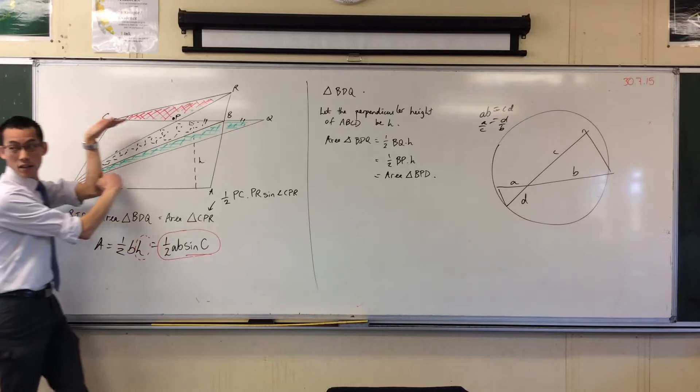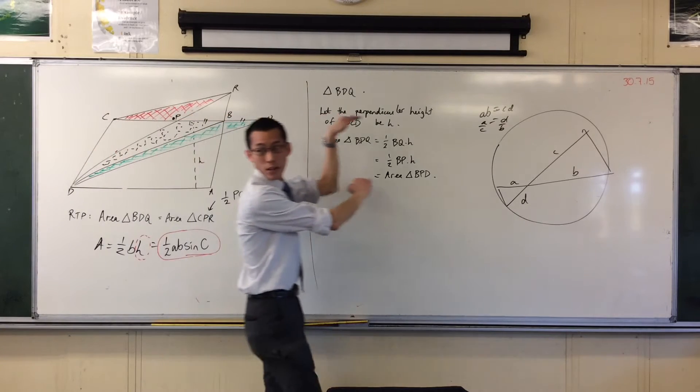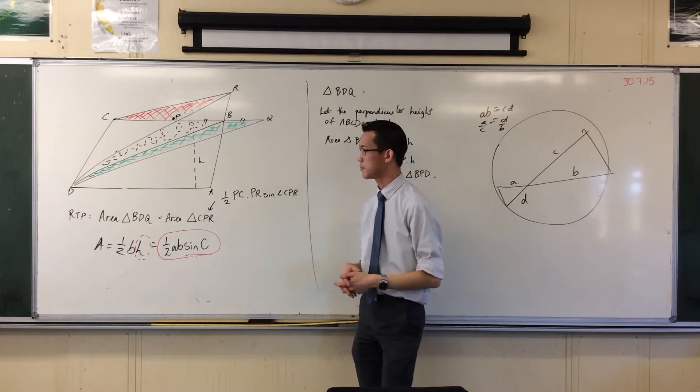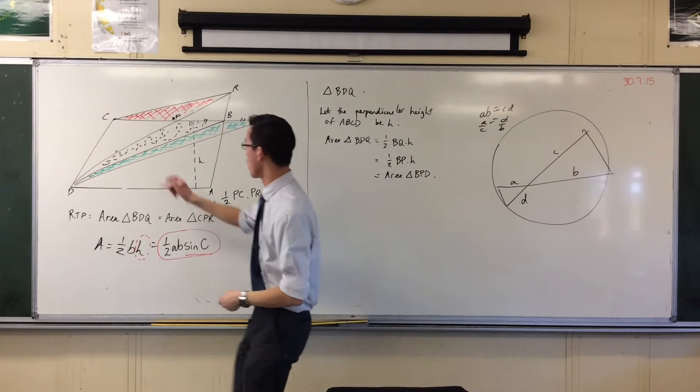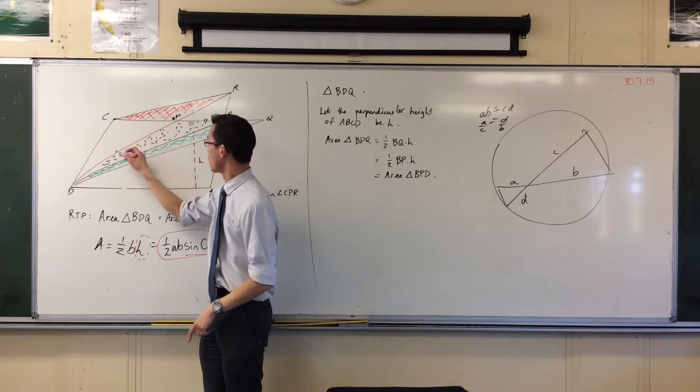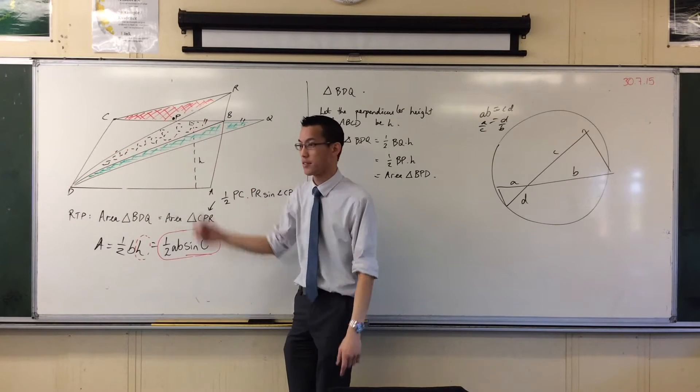So being that these are two parallel lines, the perpendicular heights all the way along will be exactly the same. Does that make sense? So for instance, if I were to draw another triangle in here, which had the same base, it would also have the same area.